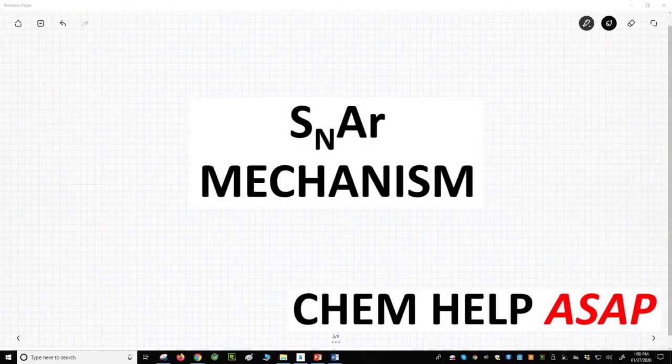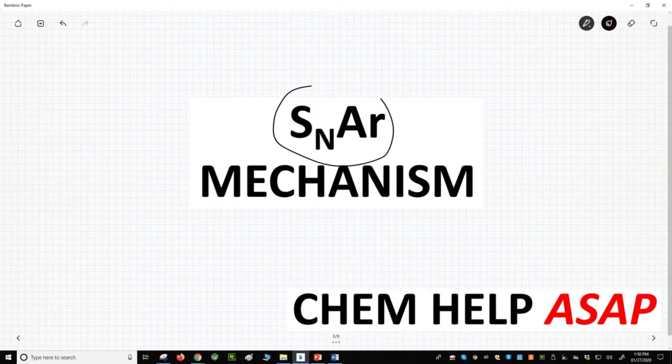Welcome to Chem Help ASAP. Let's see the mechanism for the nucleophilic aromatic substitution. It's a substitution with a nucleophile onto an aromatic ring and often gets this abbreviation SNAr.